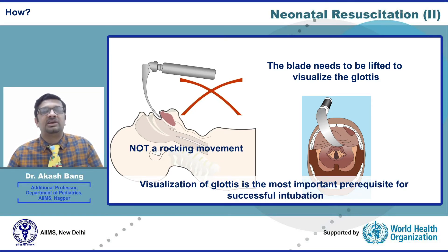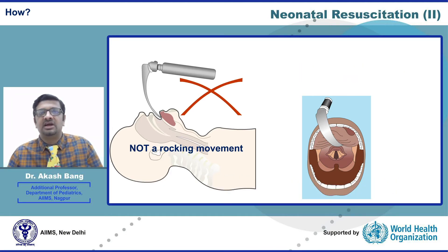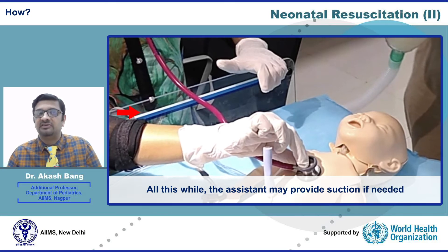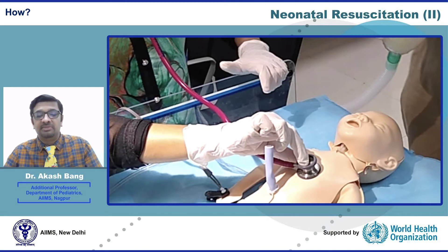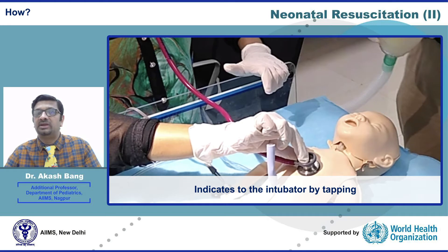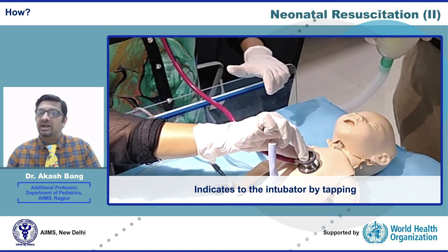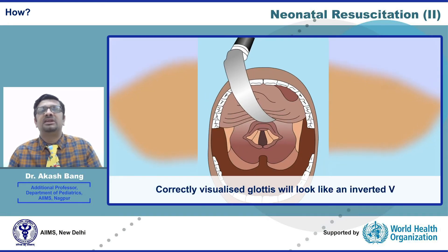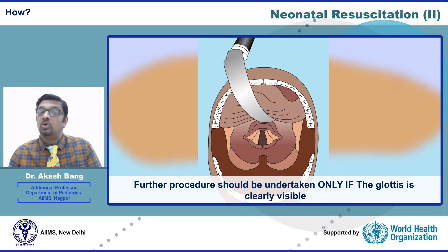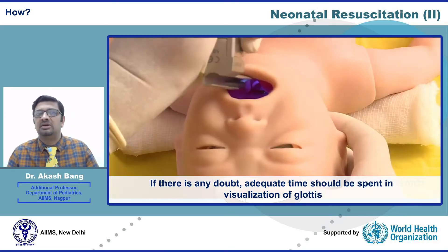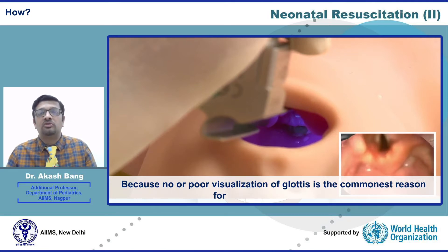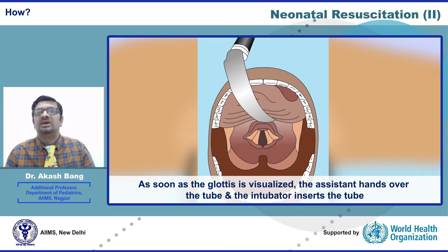Visualization of the glottis is the most important prerequisite for successful intubation. The assistant also plays a very crucial role: the assistant may provide suction if needed, should auscultate the heart rate, and should indicate to the intubator by tapping if the heart rate starts going down. The assistant should also keep time — 30 seconds is the recommended time for intubation. A correctly visualized glottis will look like an inverted V. Further procedure should be undertaken only if the glottis is clearly visible. Poor visualization of the glottis is the most common reason for unsuccessful intubation.